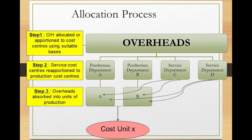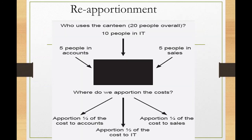Looking at reapportionment, if one service department is a canteen, we first apportion canteen expenses to the canteen department, then reapportion that cost to the cost centers based on usage. For example, if you have ten people in IT, five in accounts, and five in sales, then half goes to IT and one quarter each to accounts and sales. A suitable basis is always required, and you should read the full chapter to get in-depth information.